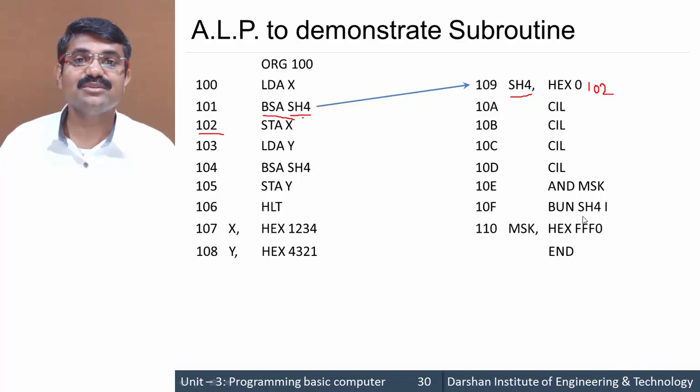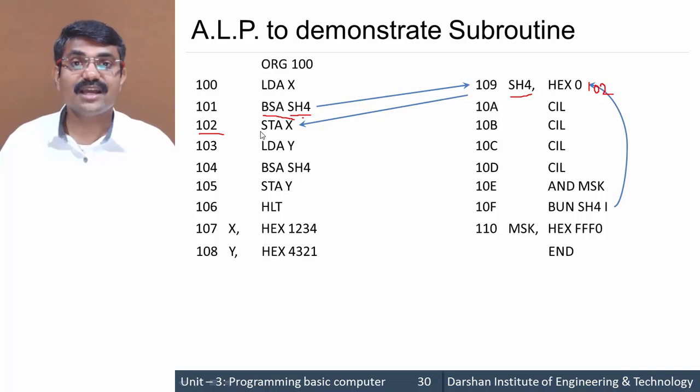SH4 stores 102, so after completing execution, we jump back to the return address, which is STA X. This is how a subroutine is called, executed, and returns.